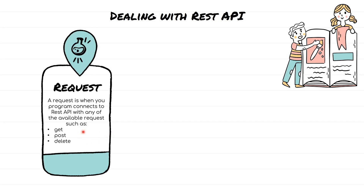A GET request, as the name says, is mostly like just going and fetching some data or getting some data. A POST request is something like when you call a REST API and you post some data. And DELETE, as the name suggests, is used to delete certain data by using the REST API.